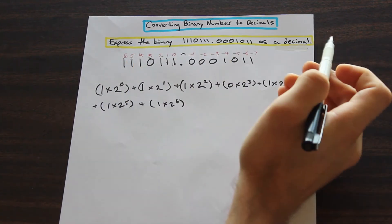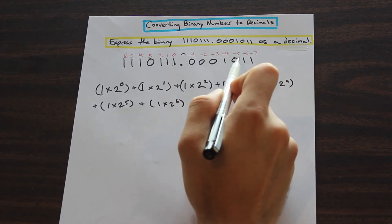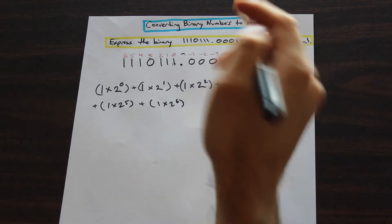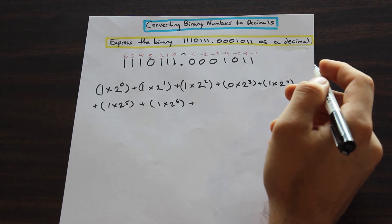So that is our first step of computing the decimal number of the whole number of the binary fraction. Let's go ahead and take a look at the decimal portion.